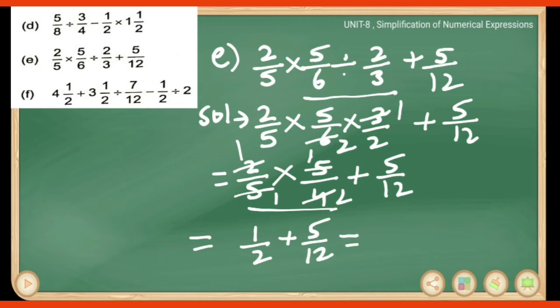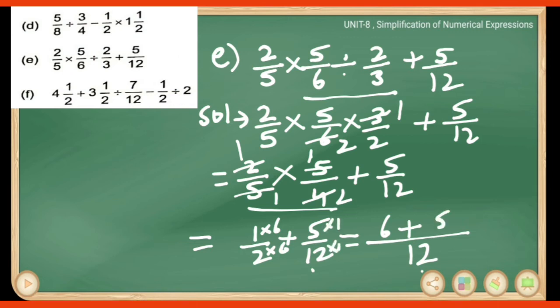These are unlike fractions, so we take LCM of 2 and 12, which is 12. Converting 1/2: multiply by 6, giving 6/12. Adding 6/12 plus 5/12 gives 11/12. So 11/12 is our answer for part E.